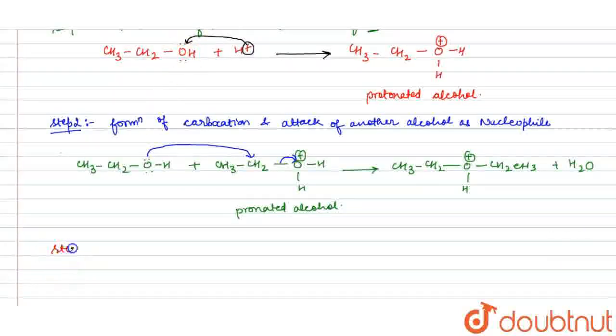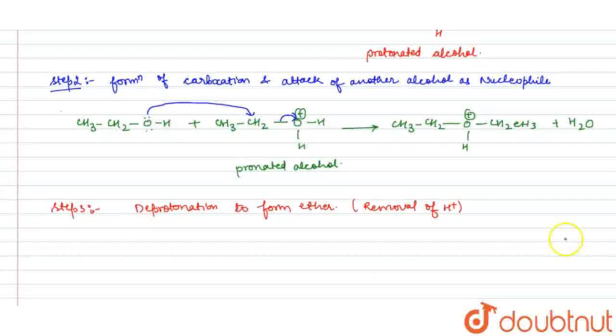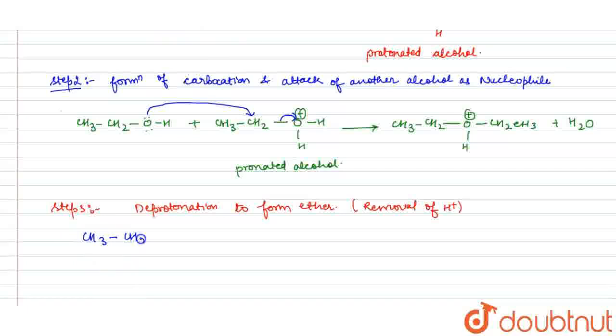Step 3 is deprotonation. Deprotonation of this compound gives ether, meaning removal of H-positive ion. The compound CH3CH2OCH2CH3H-positive shifts this bond and releases H-positive. What forms is ethoxyethane: CH3CH2OCH2CH3 plus H-positive ion.